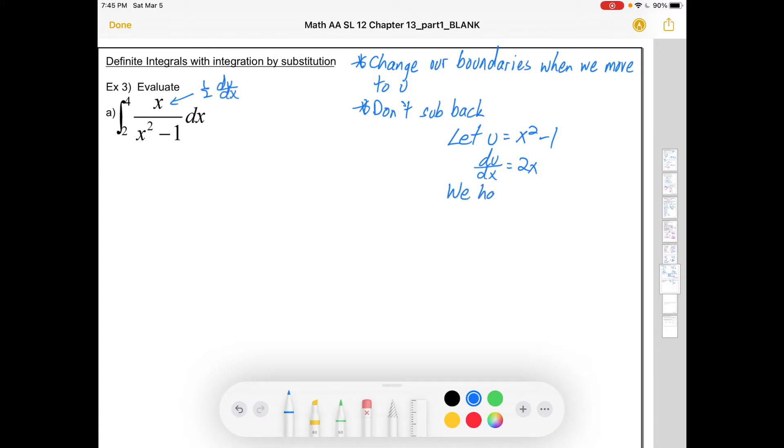We have 1 half of du by dx. And you can rearrange this as slickly as you want but I'm just going to make those substitutions pretty straightforwardly. I'm not going to try and do any fancy business. Where I saw x squared minus 1 I wrote u. Where I saw x I wrote 1 half du by dx. Then we have a dx out here.